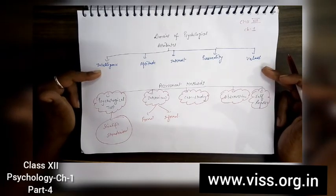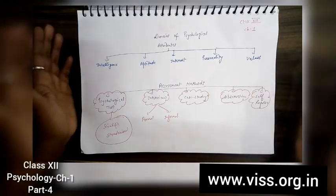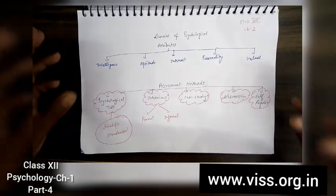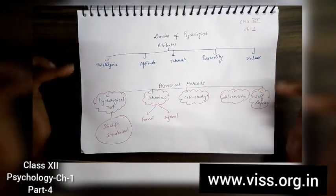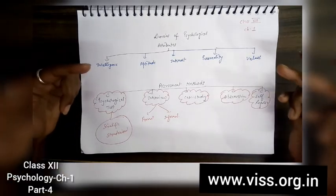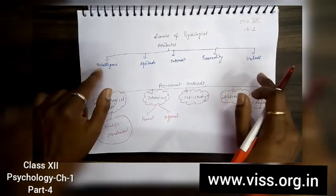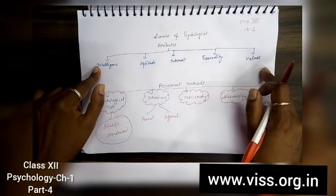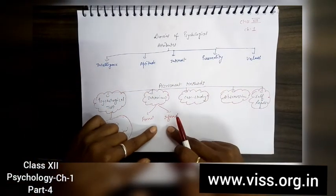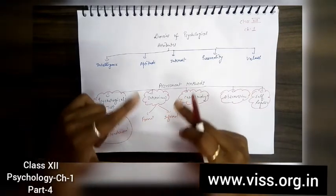You know that when you appear for the IAS exam, the third level is your interview, and in that interview five or six panelists sit together. They are all given these areas to be assessed on you. You don't understand what sort of questions are there to assess which domain of mind; however, all of them are checking all these things. So this is one of the ways to assess your personality or your psychological attributes.